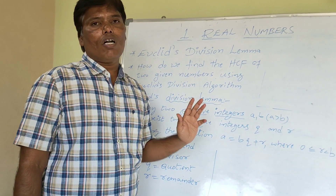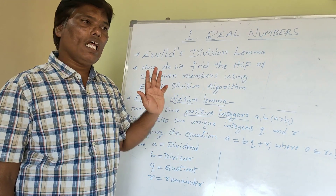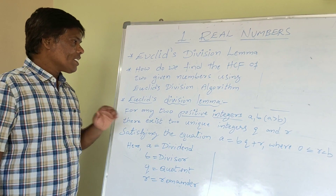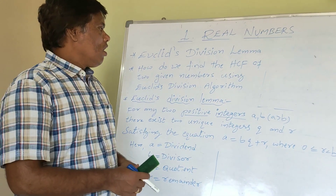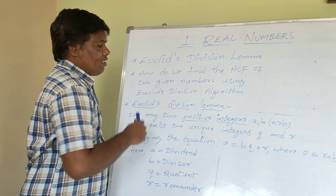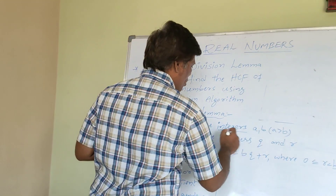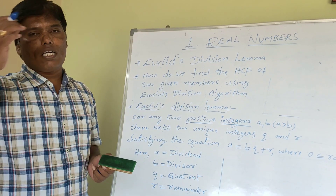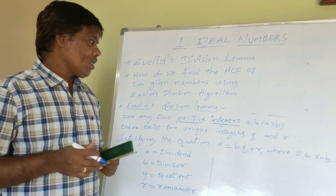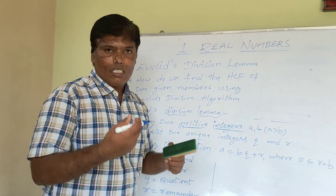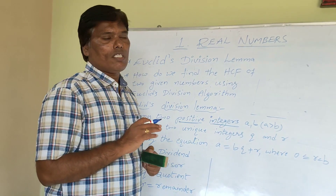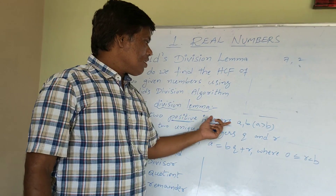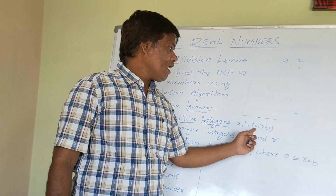I think you did not fully understand the statement of Euclid's Division Lemma, so let us see one example. The statement says 'for any two positive integers.' Positive integers are nothing but natural numbers — like 1, 2, 3, 4 and so on. For any two positive integers means we have to select two positive integers. Let us take two positive integers: 7 and 2. In the statement, the two positive integers are A and B, where A is greater than B.